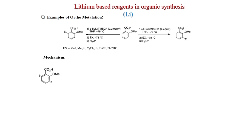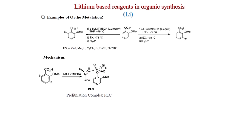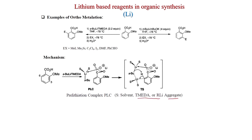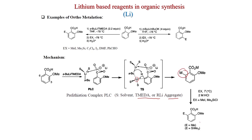The mechanism: when s-BuLi and TMEDA are used, a pre-lithiation complex (PLC) is formed. The carboxylate anion is generated and coordinates with s-BuLi, which is also connected with solvent or TMEDA aggregates. In the proposed transition state, another lithium molecule activates the C-H, the secondary butyl group attacks this hydrogen, and lithium installs at the 6-position. Treatment with electrophilic reagent then gives the product.